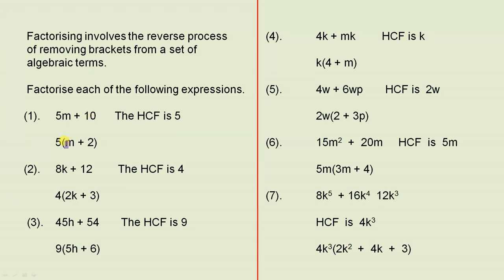Then we open this bracket up here and we say 5 times what gives you 5m? It has to be m, because 5 times m is 5m. 5 times what gives you 10? It has to be 2, so 5 times 2 is 10. So we have now factorised. That's what factorising involves.